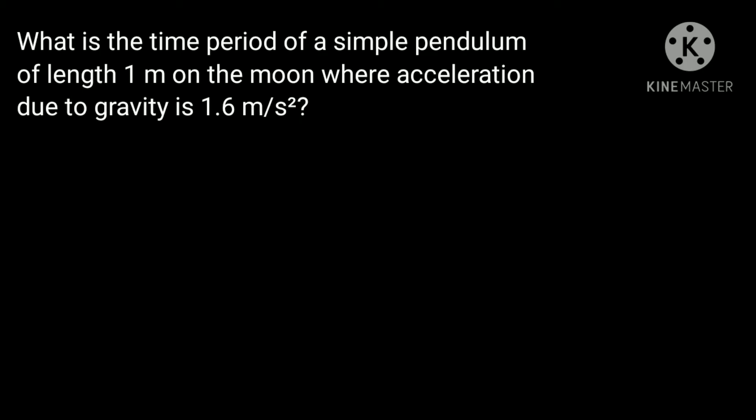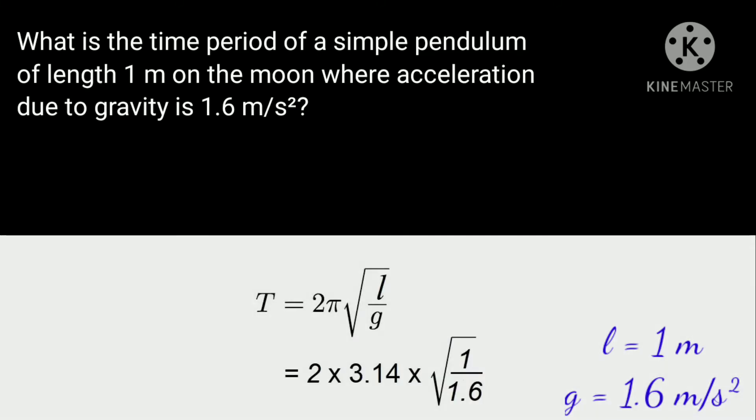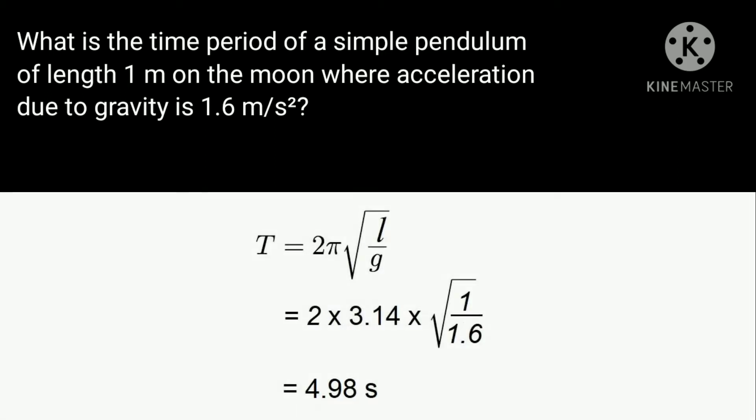Well let us calculate the time period of a simple pendulum of length 1 meter on the moon. We have T is equal to 2π square root of l by g. That's equal to 2 times 3.14 times square root of 1 by 1.6. That comes to be 4.98 seconds which is approximately equal to 5 seconds.